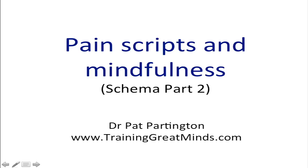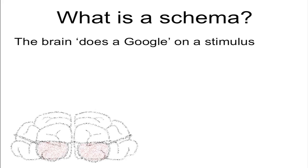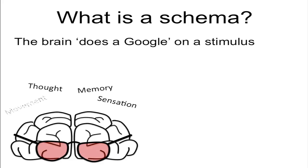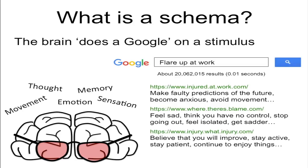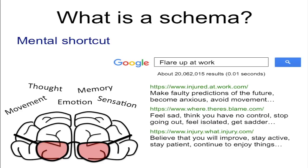Welcome to the second video on schema from Training Great Minds. This time we're looking at persistent pain and the way that it's guided and generated by a schema, and how we can use mindfulness to change it. Our brain is a search engine — it does a Google on a sensation or a feeling and lots of possible responses are returned. If a schema related to this search has survival value, it will be returned at the top, so we can think of a schema as a mental shortcut.